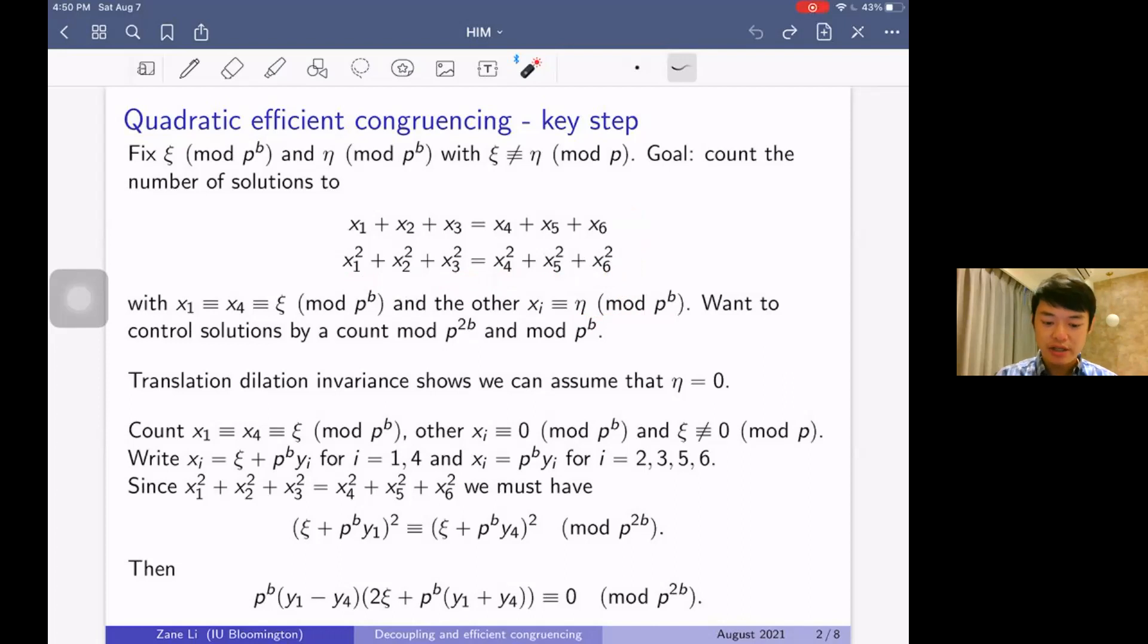Where the x_1 and x_4's are congruent to ζ mod p^b, and the other variables x_2, x_3, x_5, x_6 are congruent to η mod p^b. The idea is to control it by a count of solutions where the x_1 and x_4 variables are mod p^{2b}, and the other variables are mod p^b. In other words, we've upgraded from the data about x_1 and x_4 from mod p^b to mod p^{2b}.